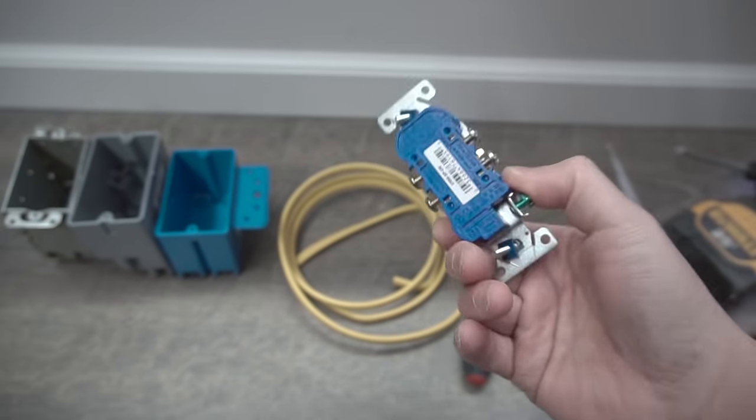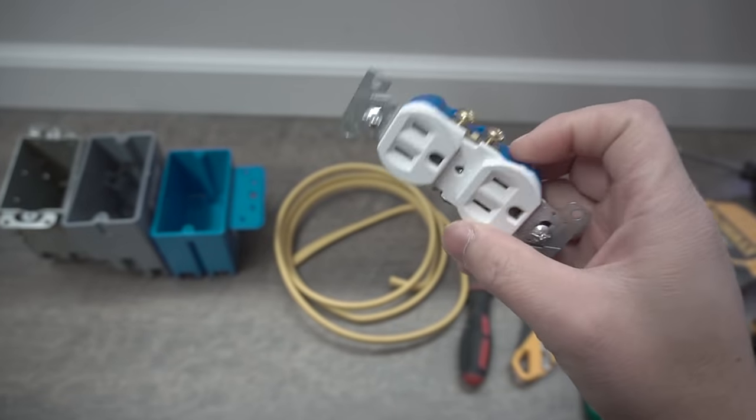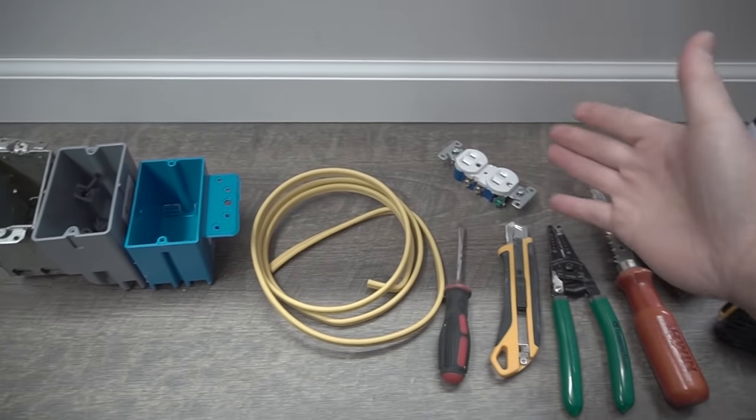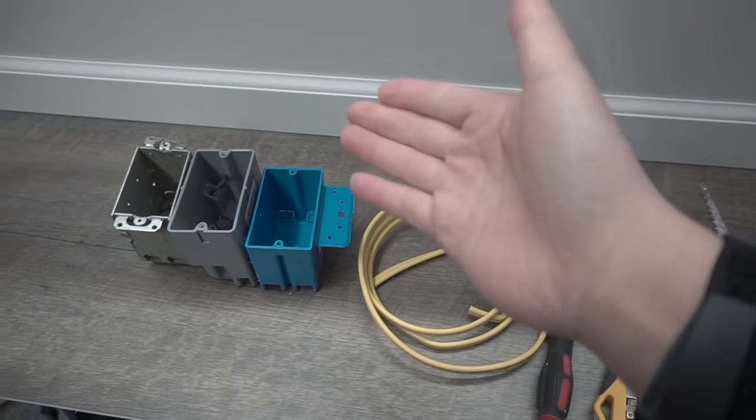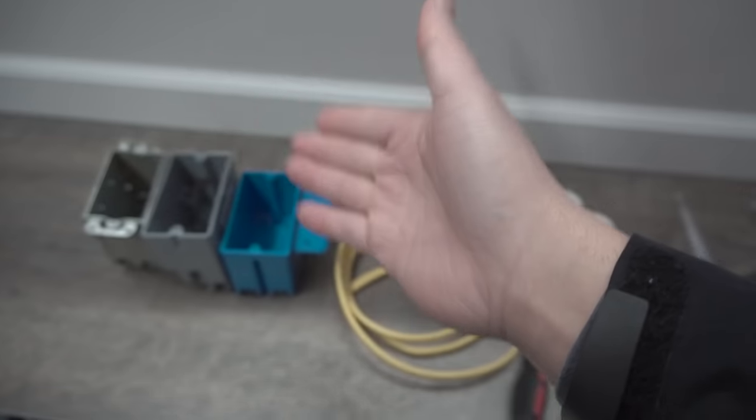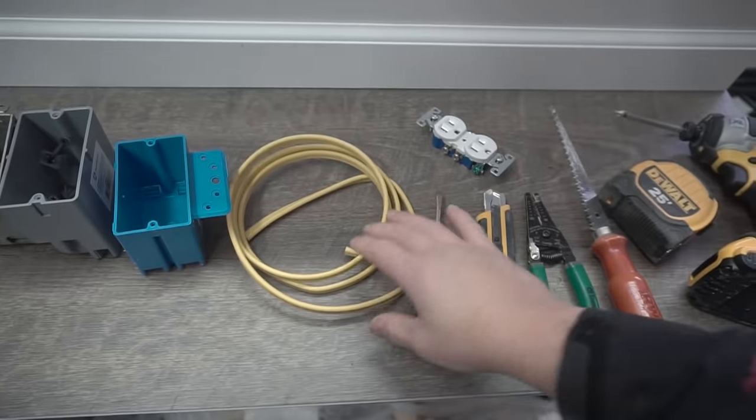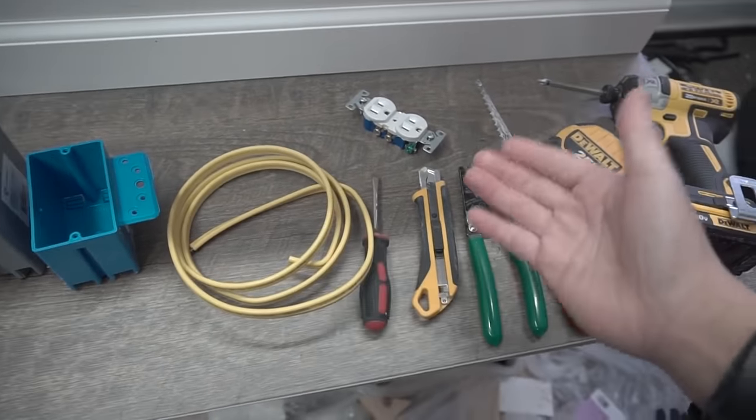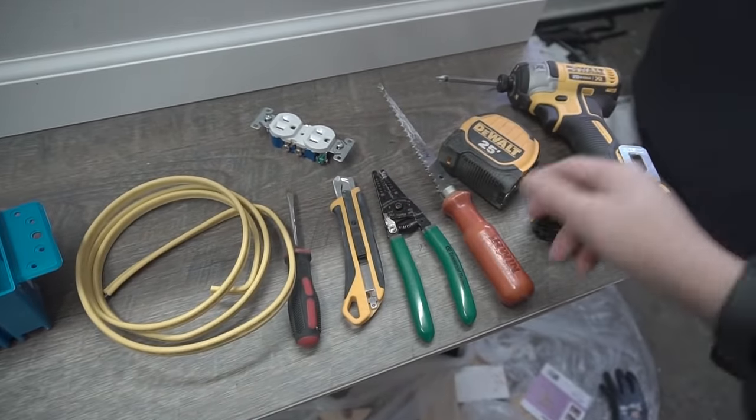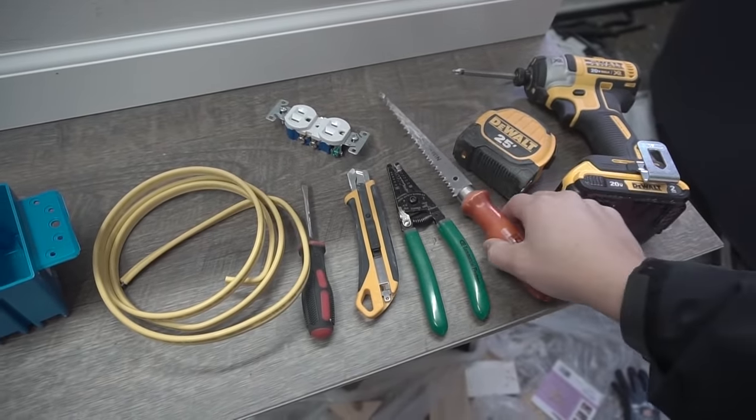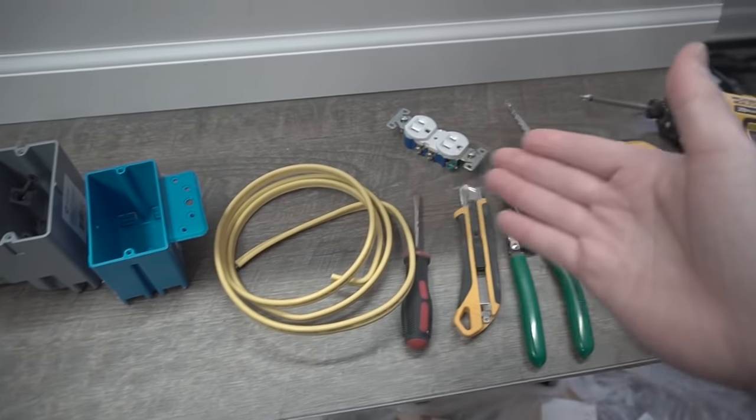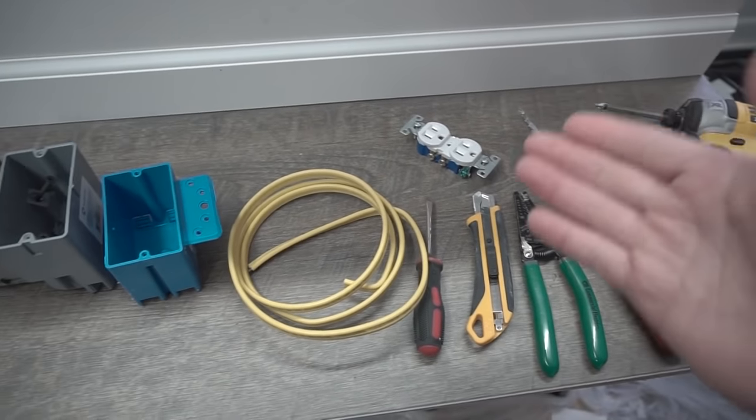In today's project, we're installing a duplex receptacle. Here are the tools and materials we'll be using. We have choices of metallic or non-metallic plastic electrical boxes, our 12-2 gauge wire, and various tools for working with drywall.